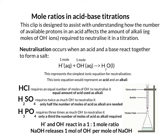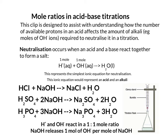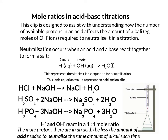Looking at the equations on screen, you can see that the ionic equation for each neutralisation reduces to the same fundamental H⁺ + OH⁻ → H₂O equation. When this applies to a titration, think carefully about what is in the burette and what is in the flask. If you keep the same amount of alkali each time, the more protons there are in an acid, the less acid you'll need to neutralise that same amount of alkali. So the more protons in the acid, the less volume of acid in your burette is needed to reach the endpoint.